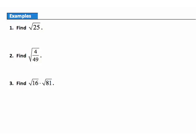Example 1: find the square root of 25. We're looking for the number that, when multiplied by itself, gives us 25. Since 5 times 5 equals 25, the square root of 25 is 5.